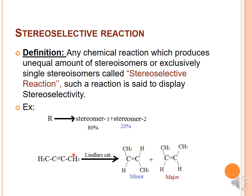For example, if you take an ethylene molecule and treat it with Lindlar's catalyst, you can see there are two stereoisomers: trans and cis. Cis is your major product and trans is your minor product — you can take this as your 80% and 20% respectively. This is one example of a stereoselective reaction.